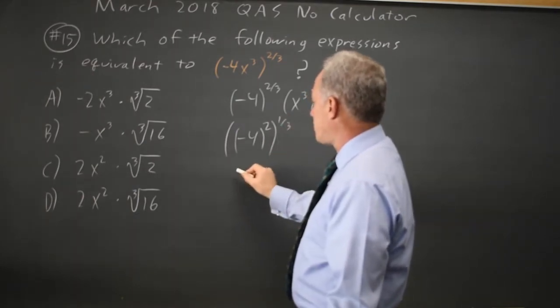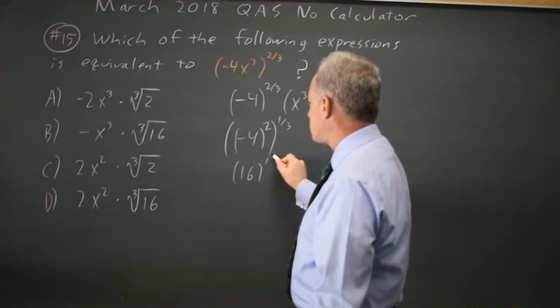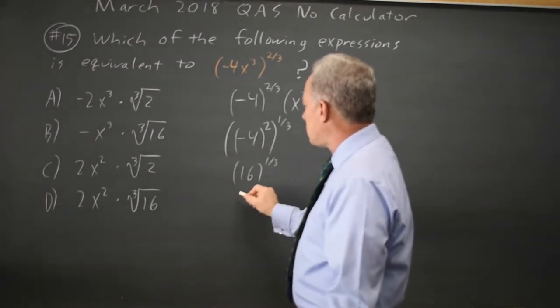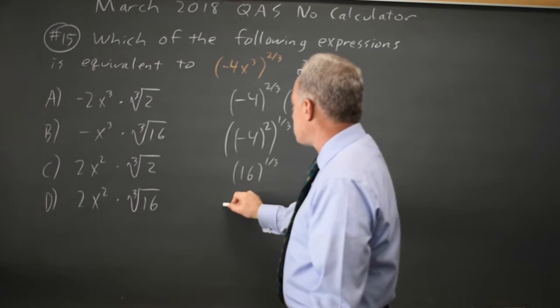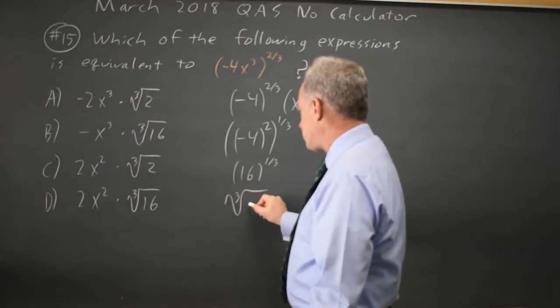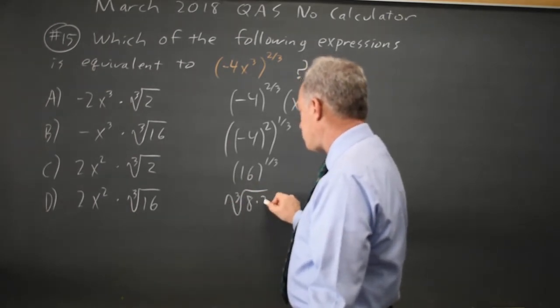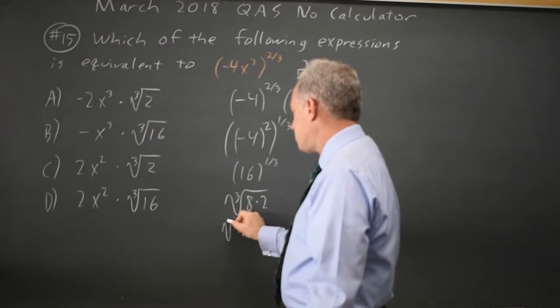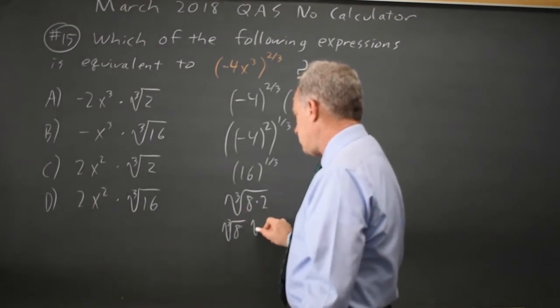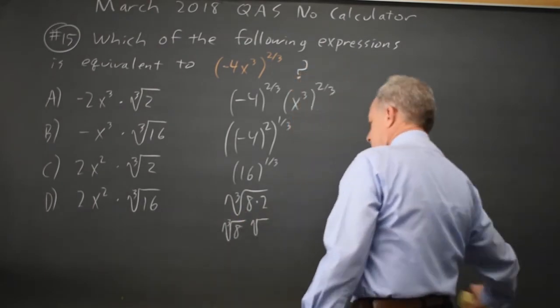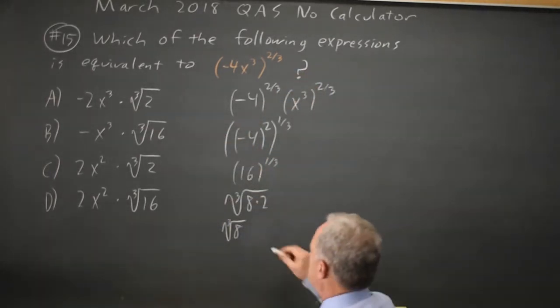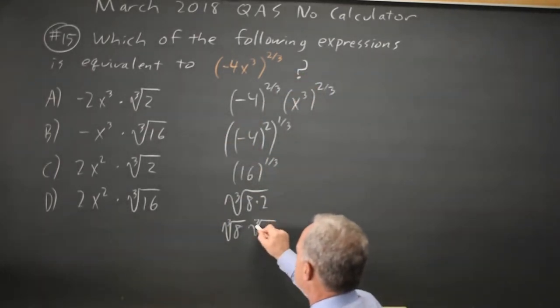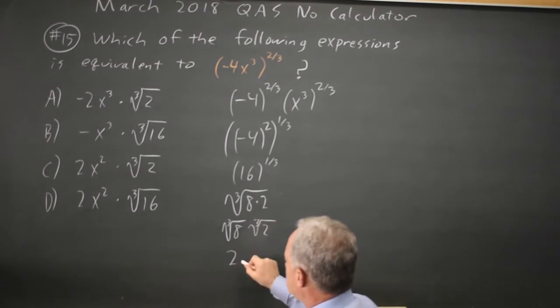Negative 4 times negative 4 is positive 16. So 16 to the 1 third which is cube root of 16 is cube root of 8 times 2 which is cube root 8 times cube root 2 and cube root 8 is 2.